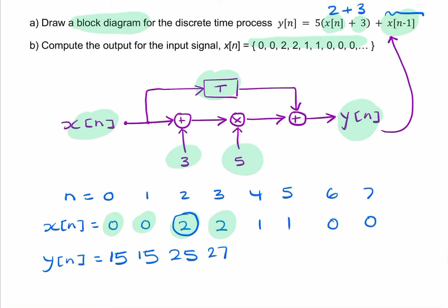And then we just keep doing that. The next value of x is 1. 1 plus 3 is 4, 4 times 5 is 20. 20 plus the previous value of x, which is 2, is 22. And you keep doing that. The next one will be 21, then there's a 16, then there's a 15. And you could carry on doing this.